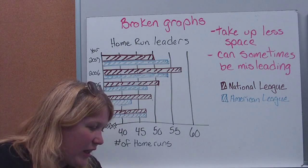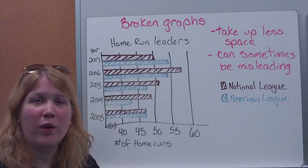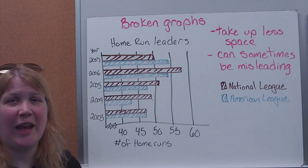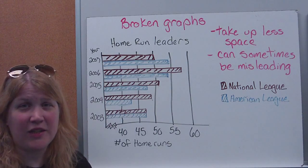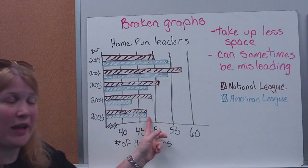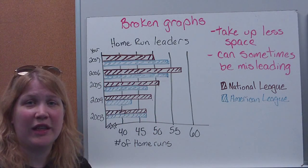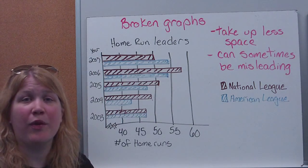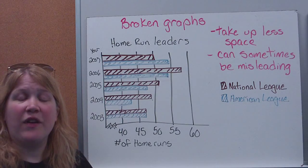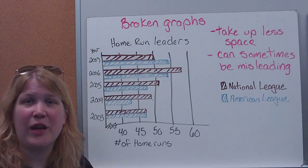First question: for what year did the leaders in both leagues hit the same number of home runs? I'm looking for where the two colors are exactly the same height. This is easier with a graph than with numbers because you can see where the two bars end at the same point. Looking at the graph, in 2003 both the American League and National League top hitters hit the same number of home runs — they were fairly even that year. This is the benefit of a graph: you can visually pick things up quickly.